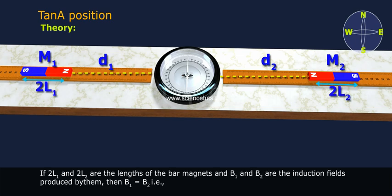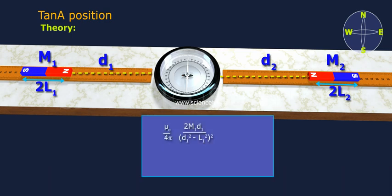If 2L1 and 2L2 are the lengths of the bar magnets and B1 and B2 are the induction fields produced by them, then B1 equals B2. That is, mu0 by 4pi times 2M1 D1 by D1 square minus L1 square whole square equals mu0 times 2M2 D2 by 4pi of D2 square minus L2 square whole square.